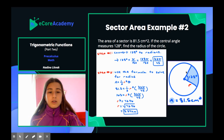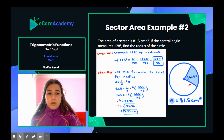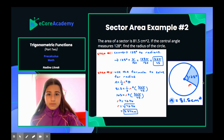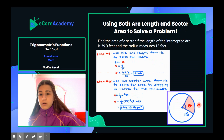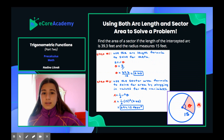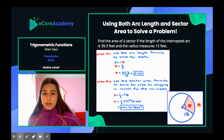In the diagram, r is what we solved for (the radius), theta is 128 degrees, and the blue represents the area of 81.5. Now that we've covered both arc length and sector area, here's an example of how to incorporate both formulas together to solve a problem.